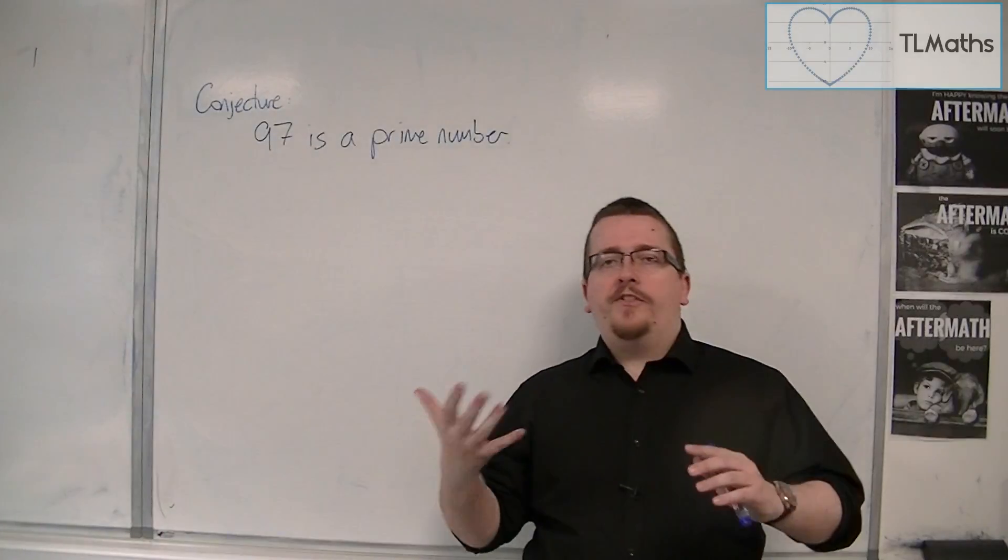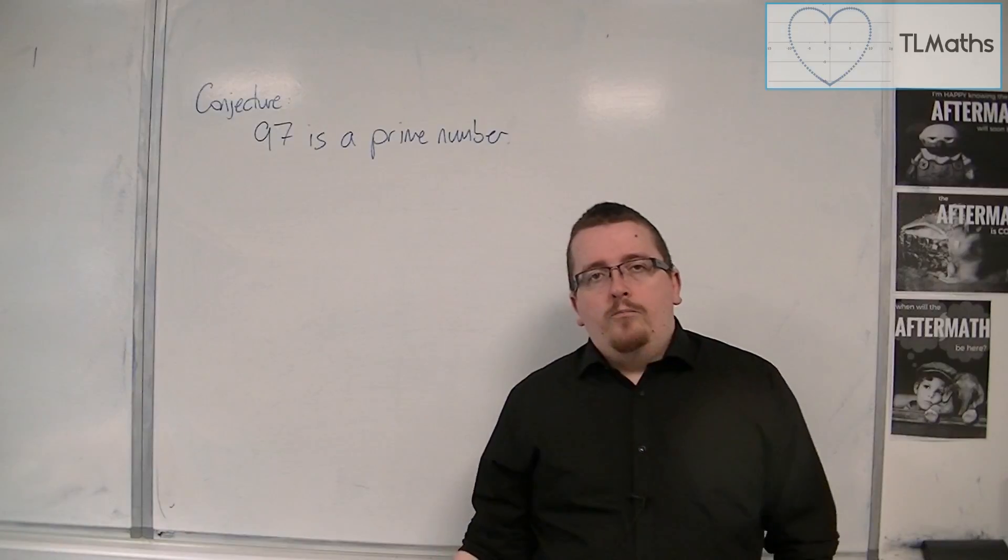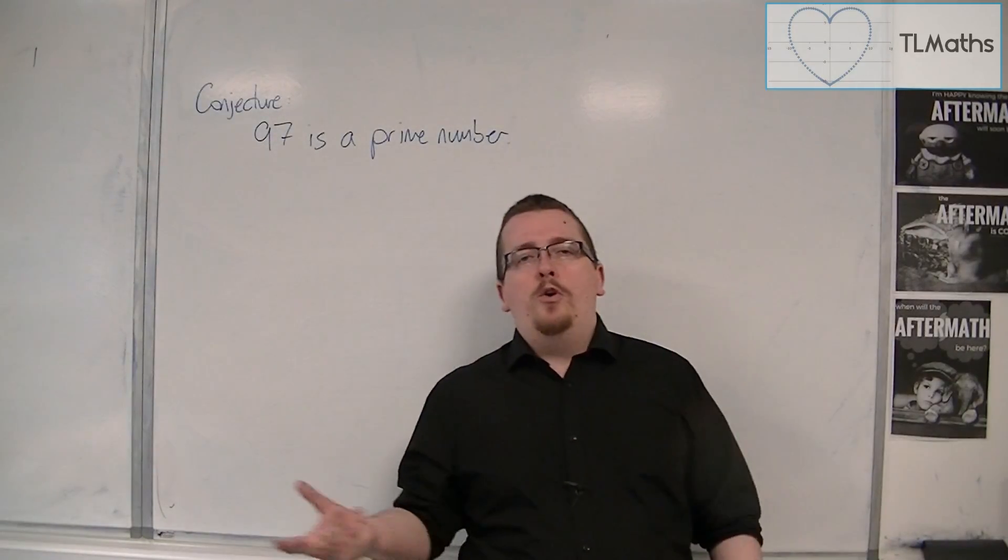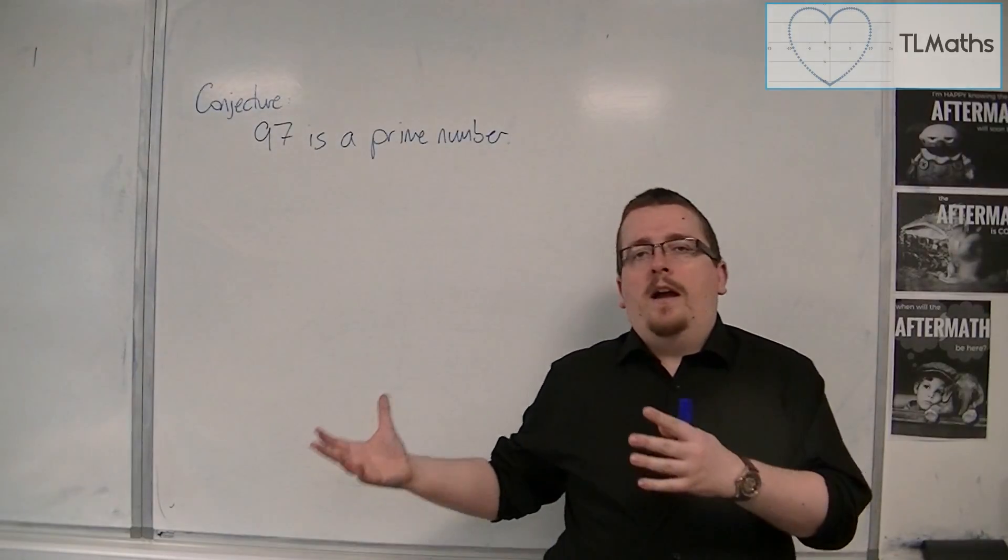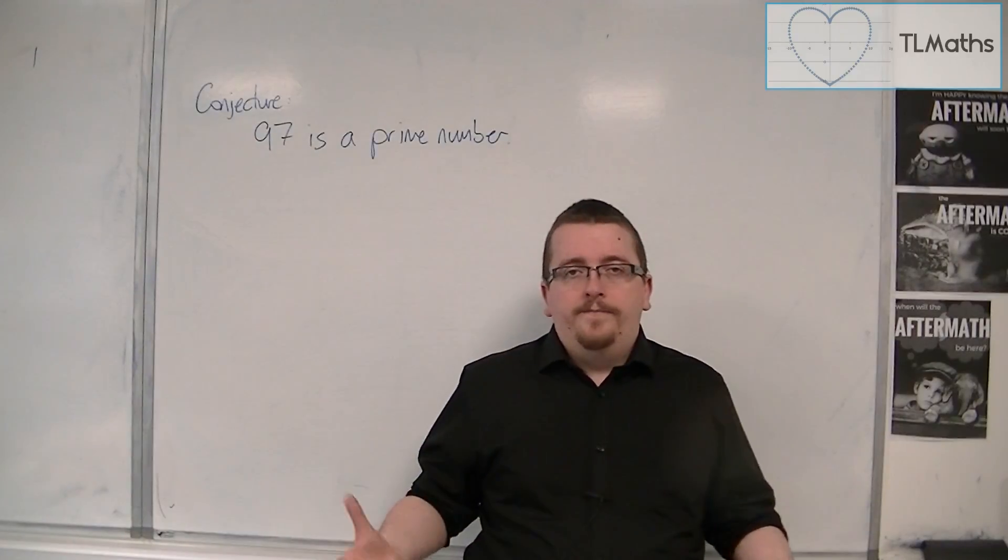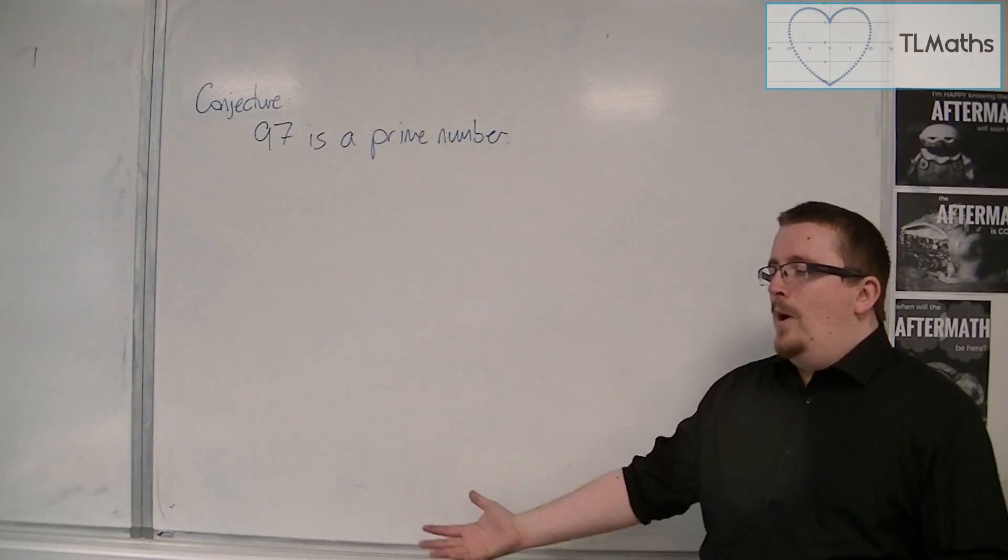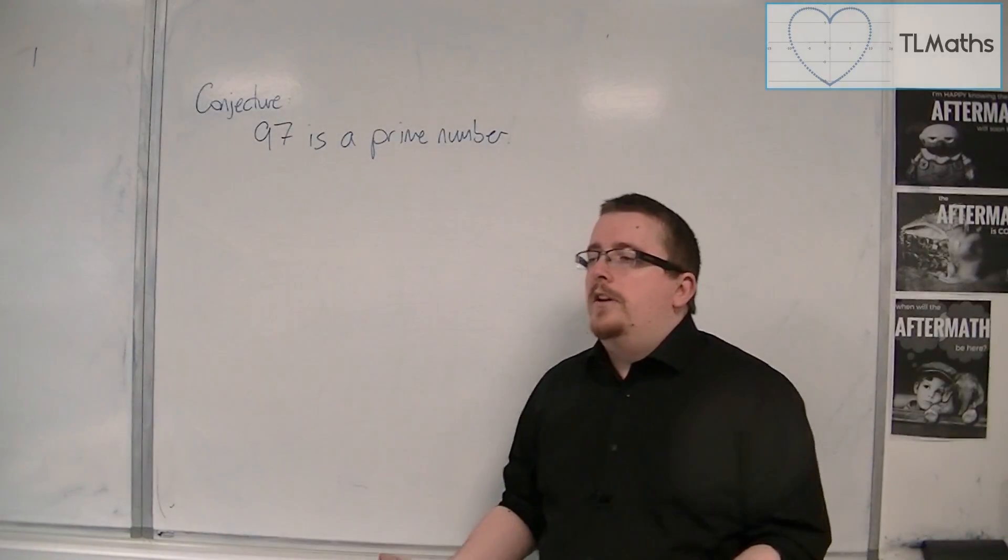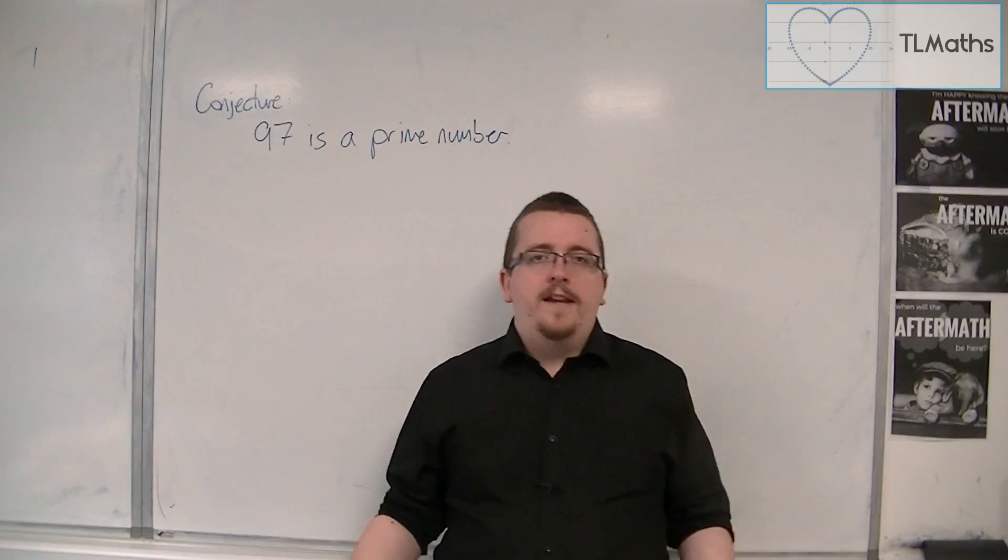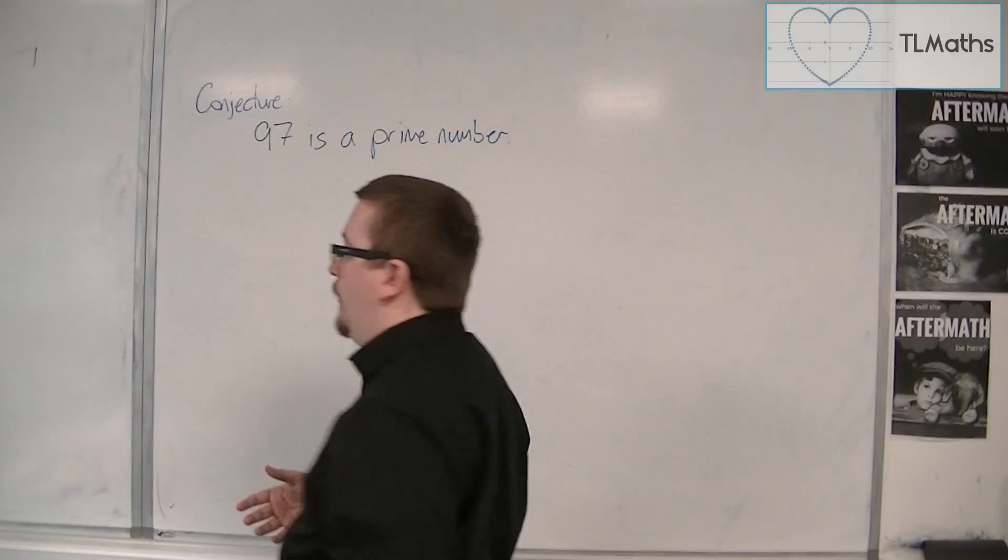Now you've got to think to yourself, how would you go about showing that 97 is a prime number? And probably your first thought is, I'm going to divide 97 by all the numbers between 1 and 97 and show that none of them work. That would be one way of doing it. However, we don't need to divide 97 by all of them. We only need to do actually a few, as we'll see.